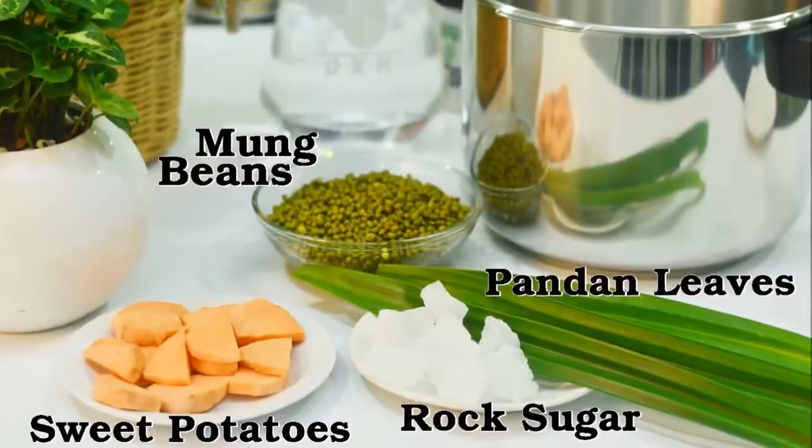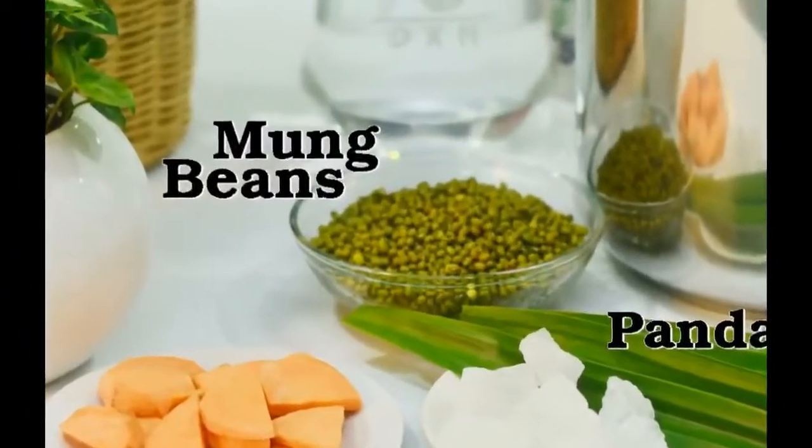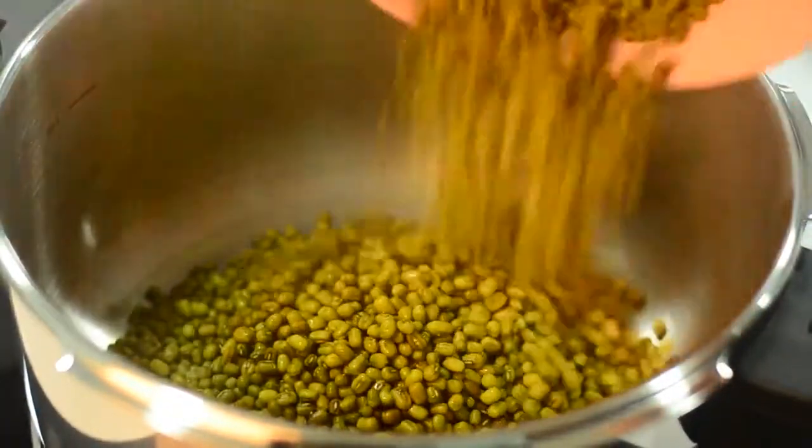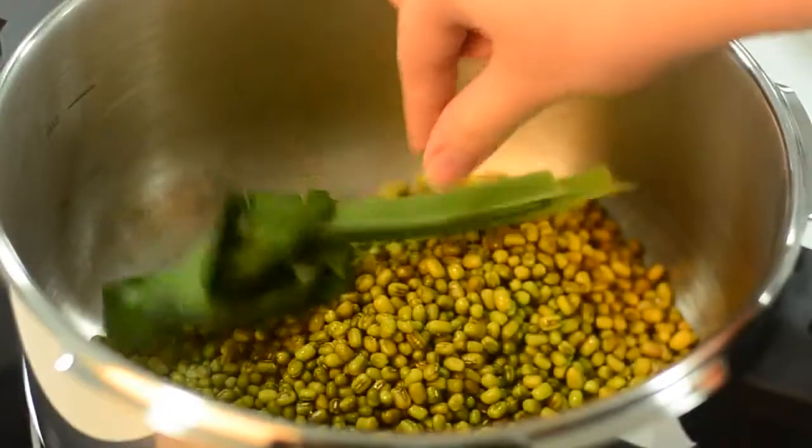These are the ingredients for this recipe. The mung beans have to be pre-soaked in water for 3 hours or overnight before being cooked in the pressure cooker. Wash the pandan leaves and put them in the pressure cooker.